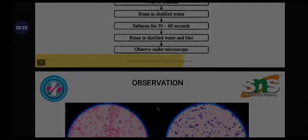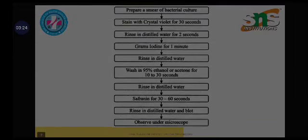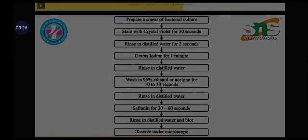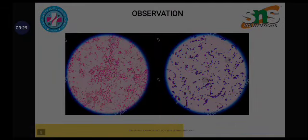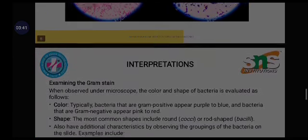These are the observations: gram positive cells are stained in purple or violet color, while gram negative cells are stained in pink or red color.